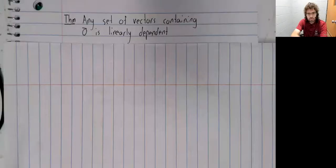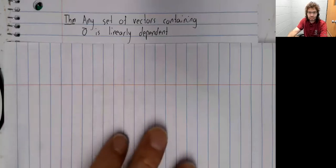In this video, we'll look at two theorems, both of which involve the zero vector in some way. We'll start here. Any set of vectors containing the zero vector is linearly dependent.